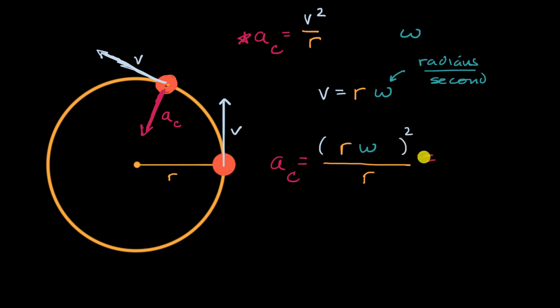Then we can simplify this. This is going to be equal to—I just used my exponent properties here—r omega times r omega is going to be r squared times omega squared, all of that over r. If I have r squared over r, that's just going to simplify to r. So there we have it.